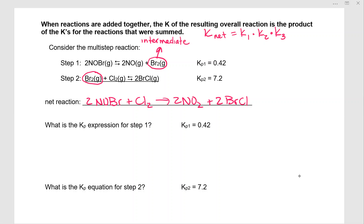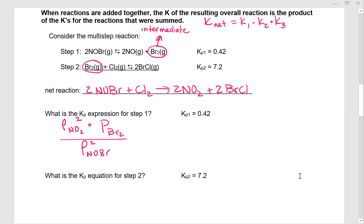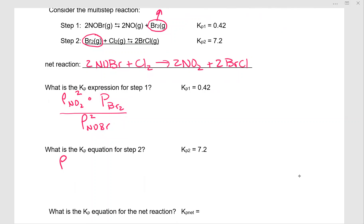We are given the K values. So the first thing we're going to do is write the Kp expression for step 1. So that is going to be partial pressure of NO2. Remember it's asking for Kp, so we better use the partial pressure symbolism. And that is partial pressure of bromine gas. And we're going to divide that by the partial pressure squared of NOBr. Now we're going to do the same thing for step 2. So we have the partial pressure of bromine monochloride squared over the partial pressure of bromine times the partial pressure of chlorine.